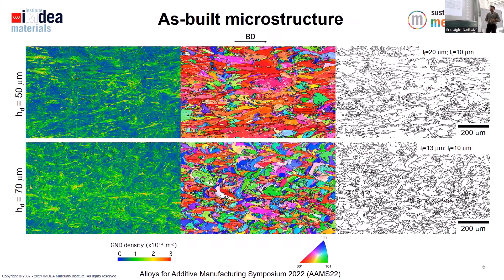We went on to characterize the as-built microstructure with EBSD maps that I will be showing throughout the presentation. On the left we have GND density maps. Blue means low GND density, and as we move to green, yellow, and red, we have higher geometrically necessary dislocation density. The IPF coloring maps are all plotted with their reference direction parallel to the building direction, from left to right.